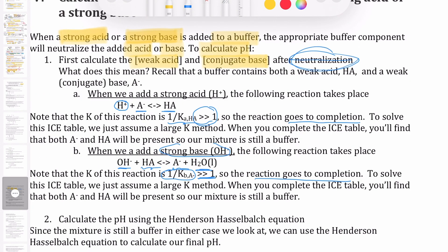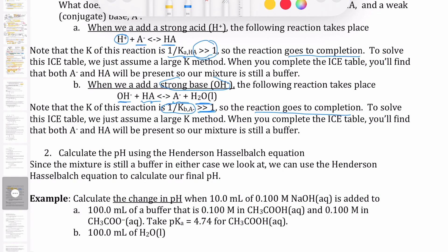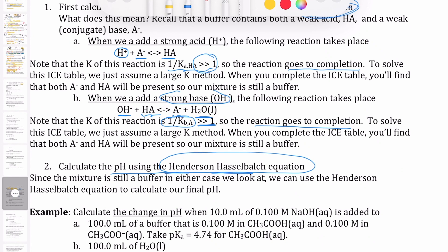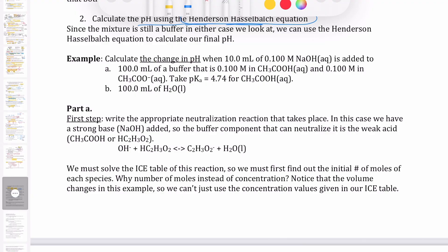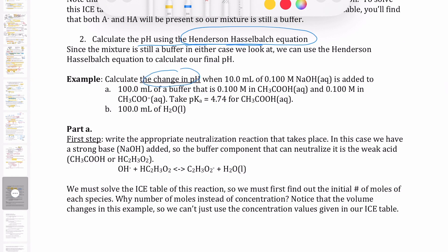This first step is called the neutralization step, and either neutralization reaction goes to completion. Once you finish the neutralization calculation, the next step is to calculate the pH using the Henderson-Hasselbalch equation — the equation we derived earlier to find the pH of a buffer. As long as the mixture still has both HA and A⁻ in it, you can use Henderson-Hasselbalch. Let's use this two-step process to calculate the change in pH when we add 10 milliliters of 0.1 molar sodium hydroxide to either a buffer solution or just water.